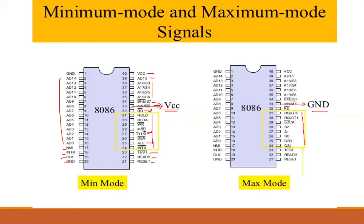Then we have ALE — Address Latch Enable. The address will be latched on AD lines. When we want the address to be known, the address latch is used. Then we have M/IO bar — memory or input/output — indicating whether a memory operation or I/O operation is active. WR bar is the write operation signal.